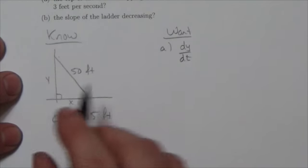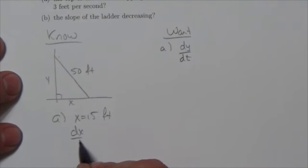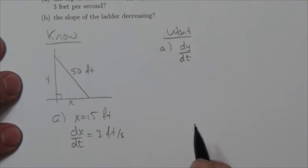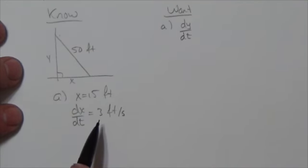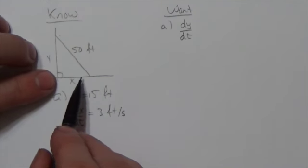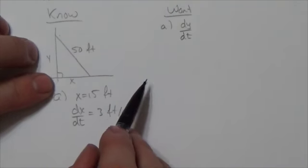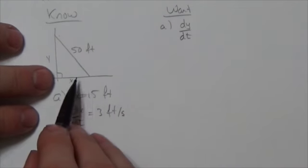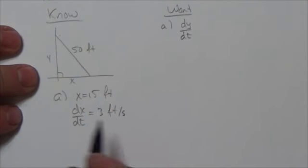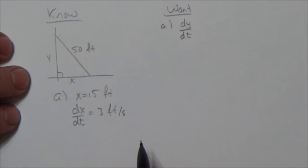And we're told that that foot is going to be moving out. dx by dt is going to be 3 feet per second. Now, it's going to be a positive 3 because the value of that variable is increasing. The change of the variable is positive because it's getting larger here. So that's what we're going to need for A here.